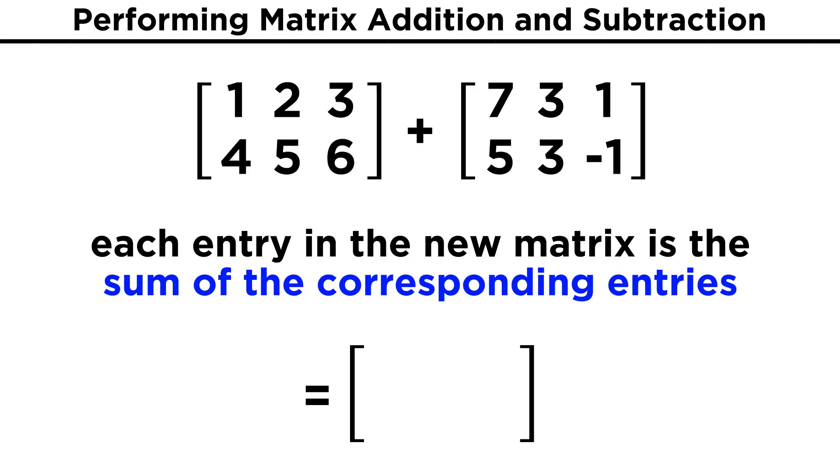Take for example the following two by three matrices: [1, 2, 3, 4, 5, 6] and then [7, 3, 1, 5, 3, -1]. The sum of these matrices will be a new two by three matrix. For the first entry, we add one and seven to get eight. For the next entry, we add two and three to get five. We continue in this manner to get four, nine, eight, and five, and this new matrix is the sum of the first two.